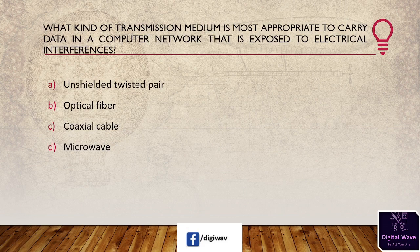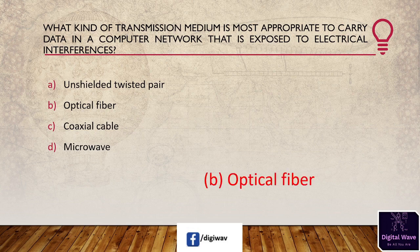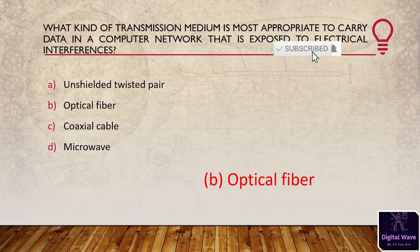Next question: what kind of transmission medium is most appropriate to carry data in a computer network that is exposed to electrical interference? Options are: unshielded twisted pair, optical fiber, coaxial cable, and microwave. The answer is optical fiber. Optical fiber is made of glass or plastic, and transmission of data occurs in the form of light rather than electric current, providing higher data transfer speed than other cables.